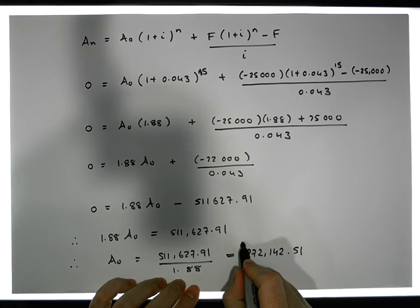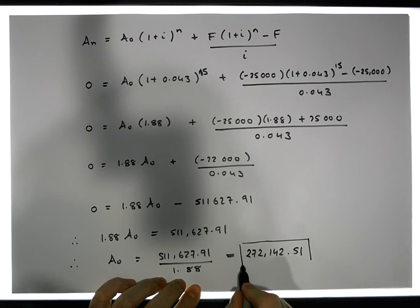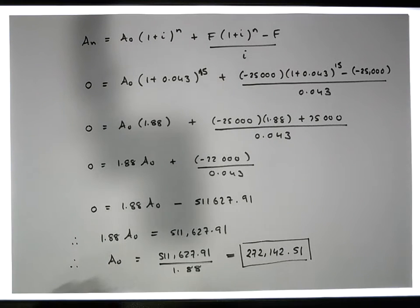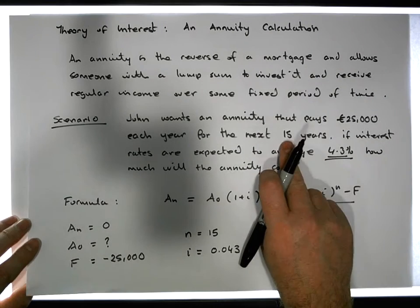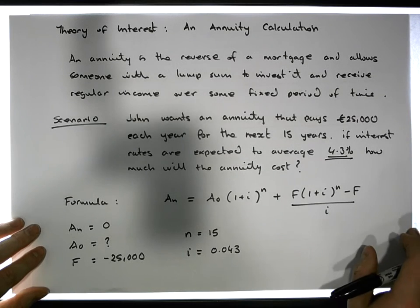If we want an annuity to pay us at the end of each of the years over 15 years, if we wanted to pay us 25,000 euros.